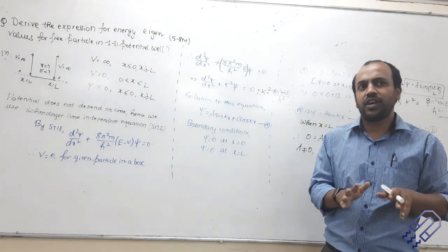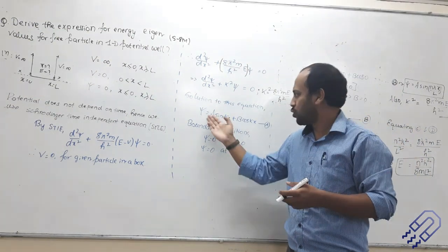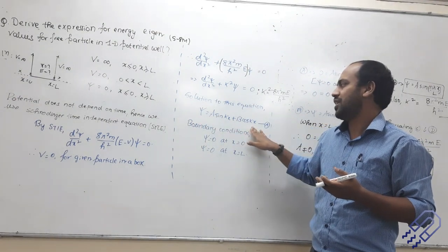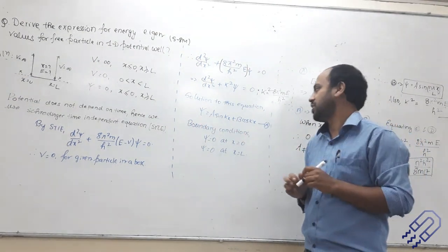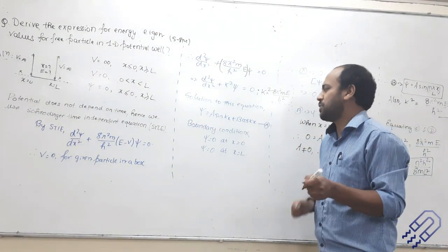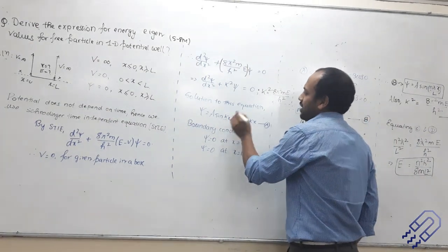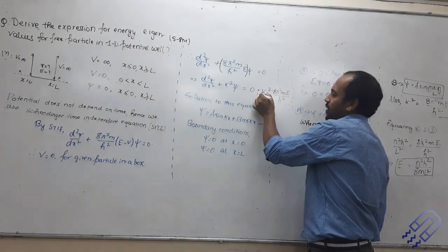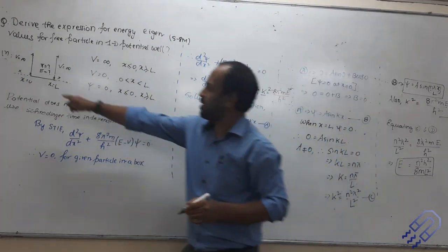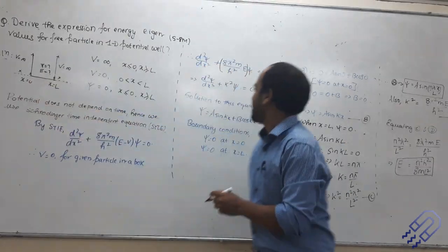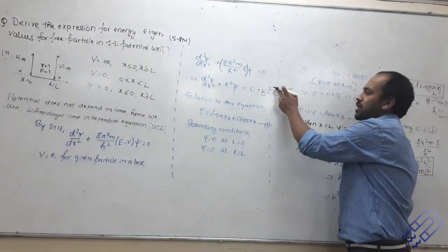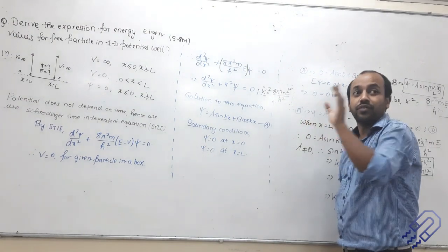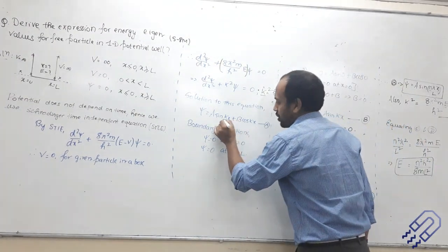At this point, I advise you: don't need to verify — you don't have that much time. You should remember this solution. The problem now is I don't know what K is. K is written in terms of energy as k² = 8π²mE/h², but I don't know the value of K. If I know K, then only I can find out energy. K is the first unknown term I need to find. I also need to know what A and B are to know everything about the system.